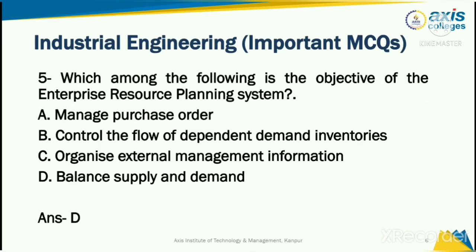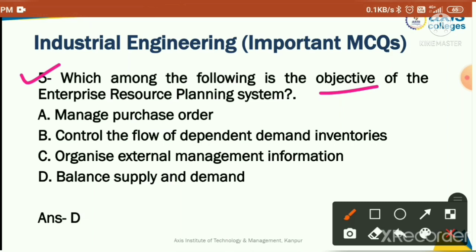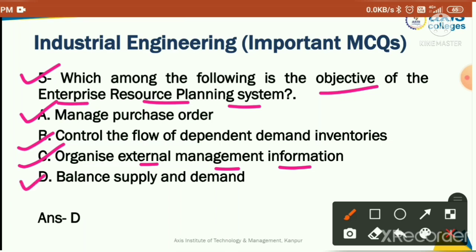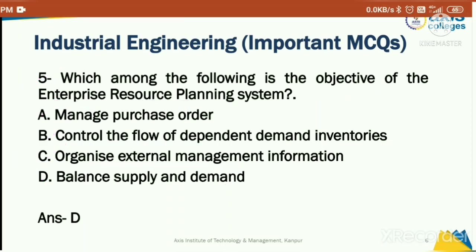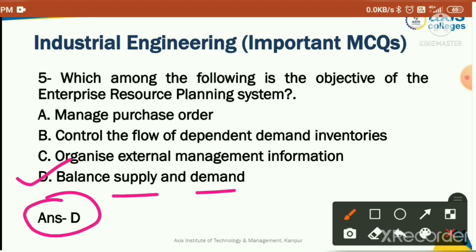Which among the following is the objective of the enterprise resource planning system? Options: manage purchase orders, control the flow of dependent demand inventories, organize external management information, or balance supply and demand. Option D is the correct answer: balance the supply and demand. This is the main objective of the enterprise resource planning system.